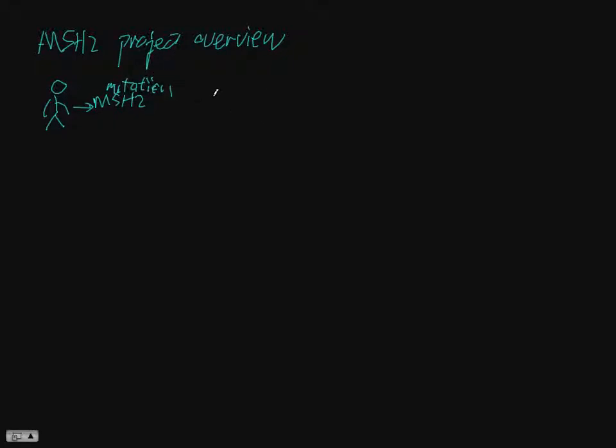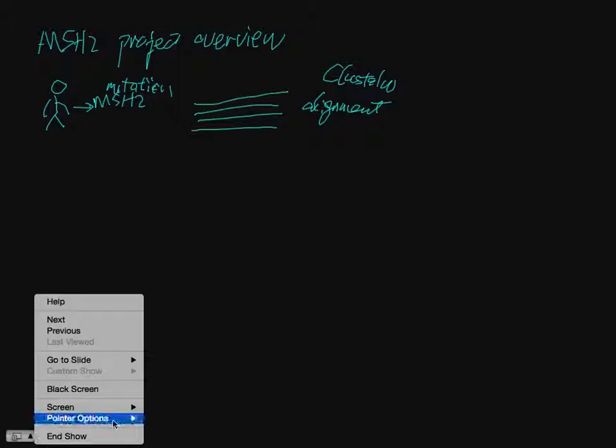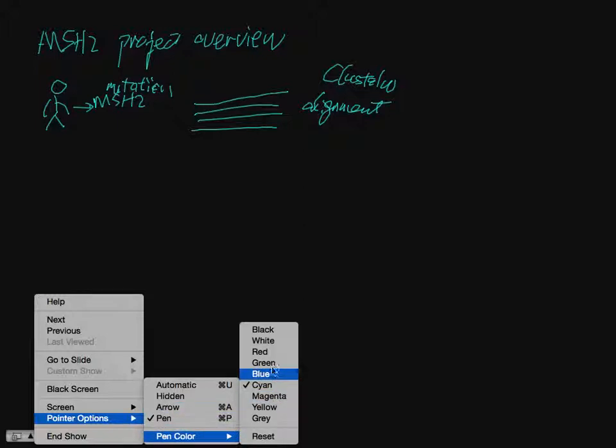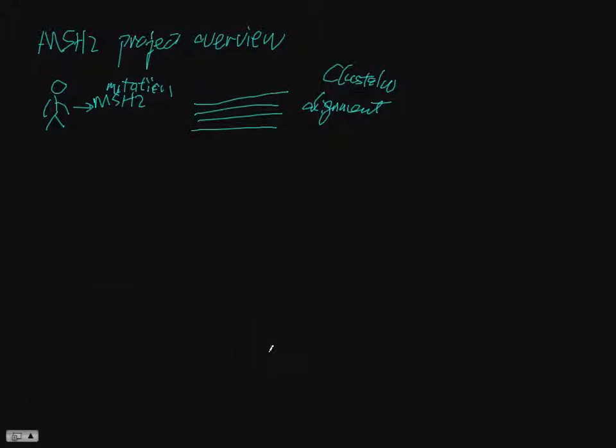How do we know about that mutation? We align the MSH2 gene using a cluster alignment, for example. Some people will have mutations in some parts of it - those are the mutants. On top of the wild type, that's mutant one, mutant two, mutant three.